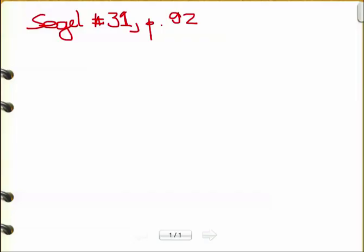Now let's do problem 31 on page 92 of Seagull's biochemical calculations. The problem asks: what are the final hydrogen ion concentration and pH of a solution obtained by mixing 400 milliliters of 0.2 molar NaOH with 150 milliliters of 0.1 molar phosphoric acid?